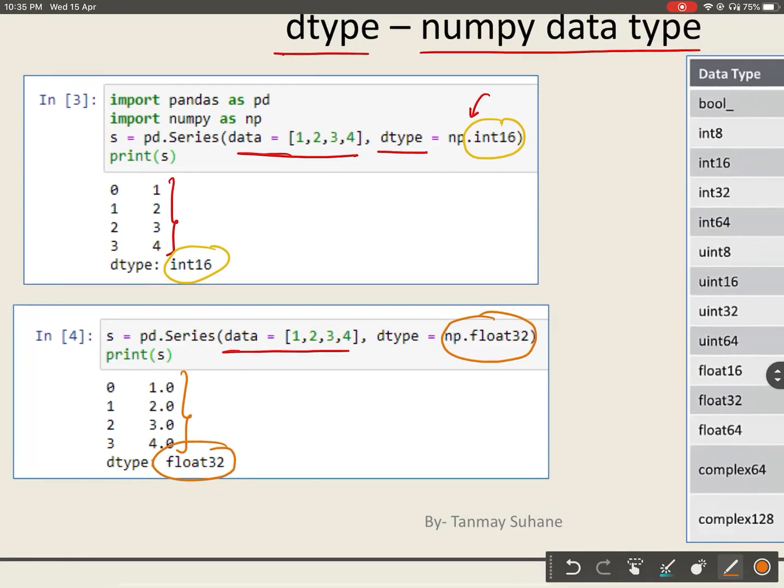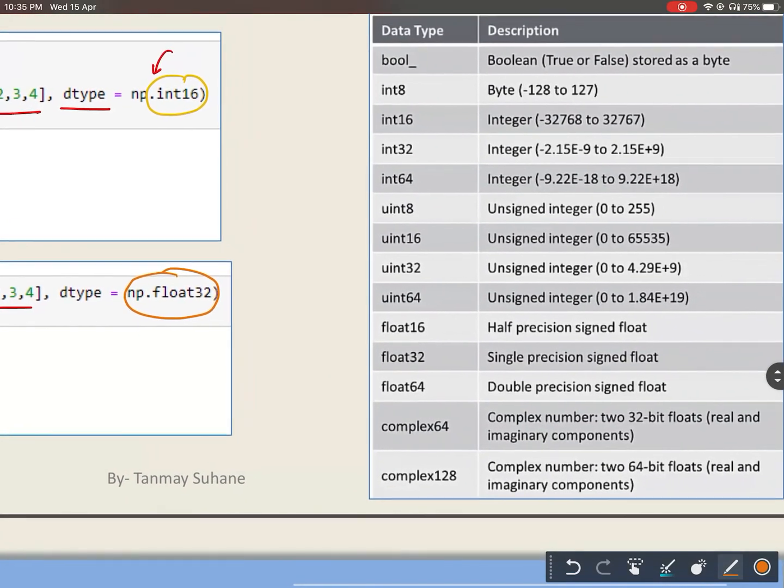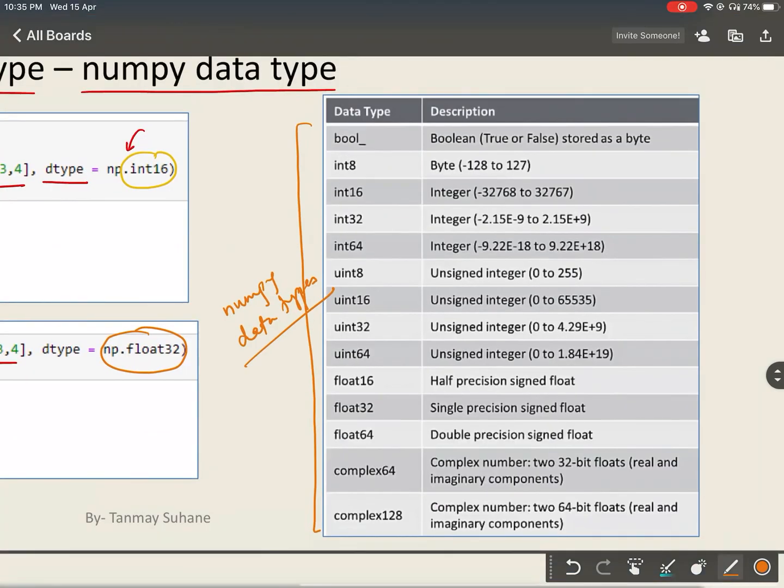Let us now see what different data types you can assign to series object data. This is the list of numpy data types. You can assign any of the data types from here.